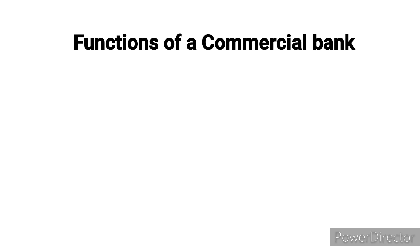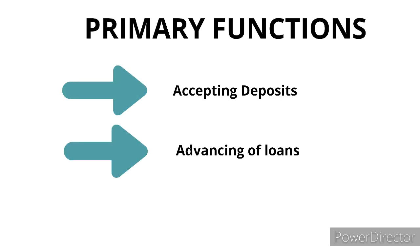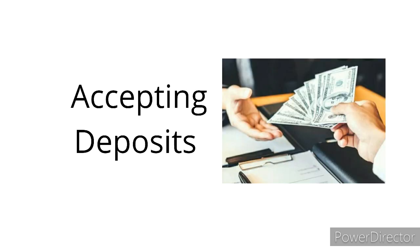The functions of commercial banks are divided into two heads: primary functions and secondary functions. The two primary functions are the same as described in the definition — accepting deposits and advancing loans. Commercial banks accept deposits in several forms according to the requirements of different sections of society.